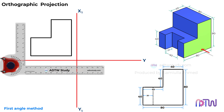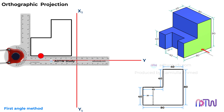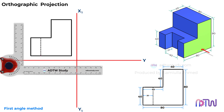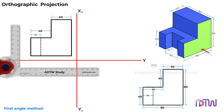We have almost completed the front view. The only part left to draw is the hidden slot, which is not visible in the front view — we will represent this slot with a dotted line. Mark a point at a distance of 20 millimeters from the side as shown, and then draw a vertical dotted line. In the end, do the dimensioning. With this we complete the front view of the given figure.